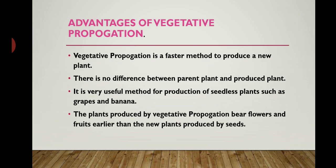Third, it is a very useful method for production of seedless plants such as grapes and banana. This method is widely used in the production of seedless plants because they do not have seeds. Plants normally grow from a seed, but seedless plants can be grown by artificial vegetative propagation. Those seedless plants include grapes and banana.